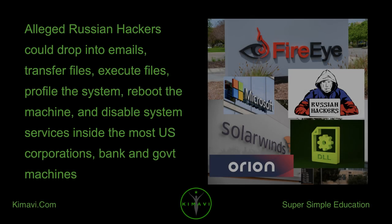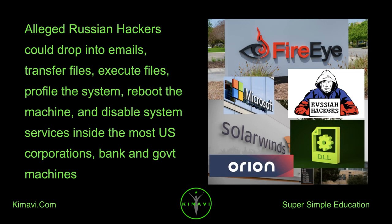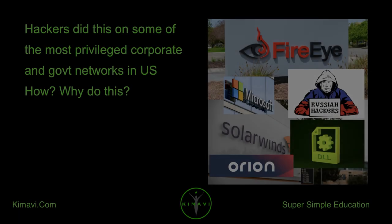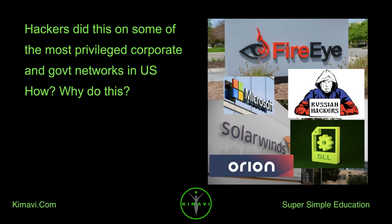Alleged Russian hackers could drop into emails, transfer files, execute files, profile the system, reboot the machine, and disable system services inside most U.S. corporations, banks, and government machines. Hackers did this on some of the most privileged corporate and government networks in the U.S.